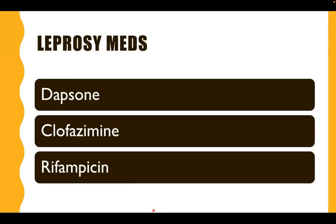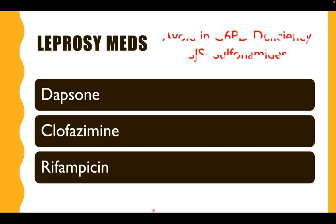For medications for Mycobacterium leprae, don't forget dapsone, clofazimine, and rifampicin. It is important to note that it is only rifampicin which is used for both Mycobacterium tuberculosis and Mycobacterium leprae. Dapsone is a sulfonamide; therefore, watch out for Stevens-Johnson syndrome and avoid this in patients with G6PD deficiency.